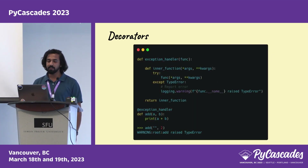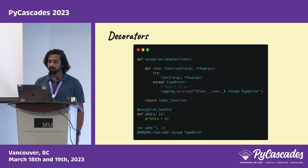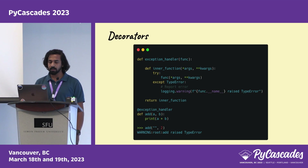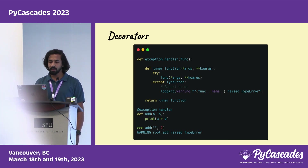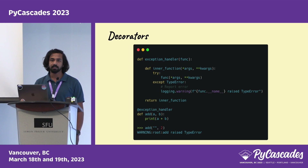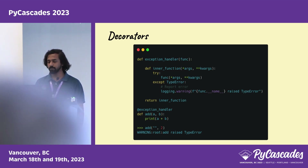Here is an example: we have an exception handler decorator that catches type errors. Instead of raising them, it logs a warning. It's applied to an add function. When passing wrong arguments, instead of raising the error and stopping execution, it will log a warning message with the function name.